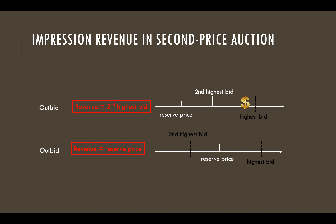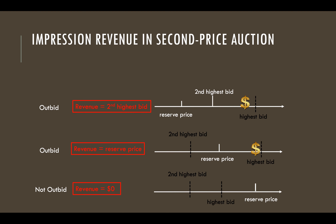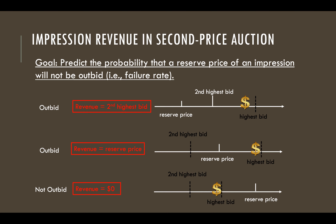In this case, the publisher expects the reserve price can be close to the highest bid. More importantly, the reserve price should not be too high to be outbid. If no advertiser can outbid the reserve price, the publisher's revenue is zero dollars and is largely hurt. The reserve price is expected to be lower and close to the highest bid. Therefore, the goal of the project is to predict the probability that a reserve price of an impression will not be outbid.